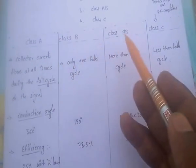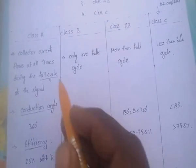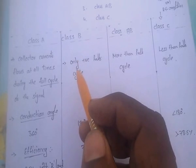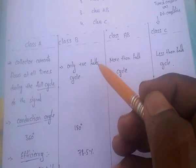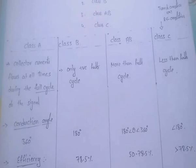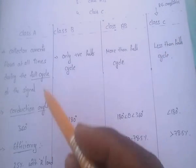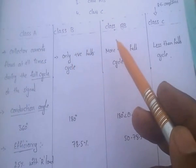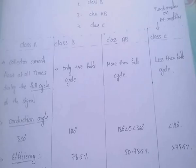In Class A, collector current flows during the full cycle of the signal. In Class B, it flows only during the positive half cycle. In Class AB, collector current flows for more than half a cycle. In Class C, collector current flows for less than half a cycle.